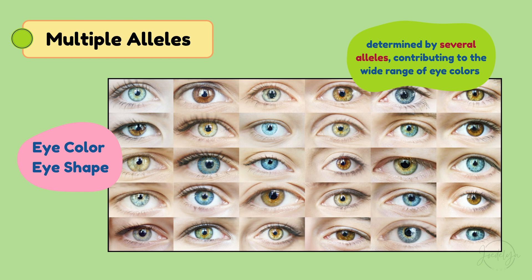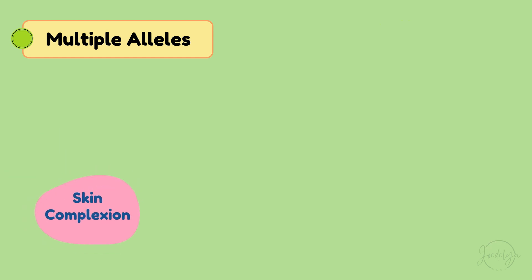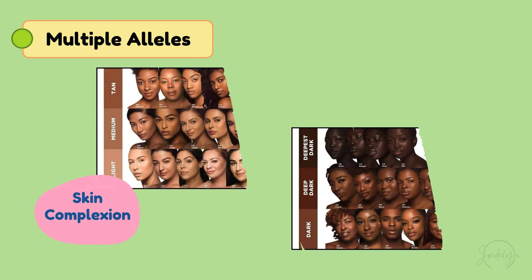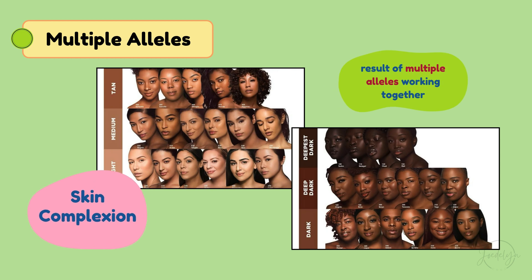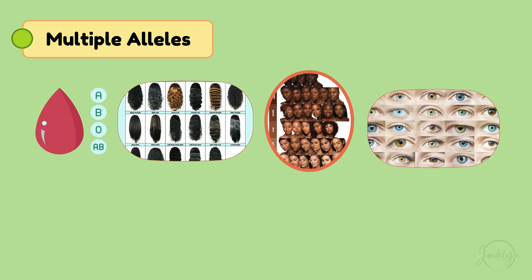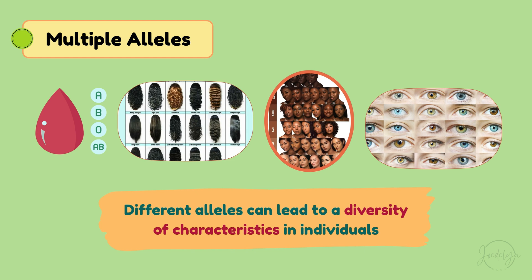Eye color contributes to the wide range we see — like blue, green, and brown — as well as differences in shape. Even skin complexion, ranging from lighter to darker shades, is a result of multiple alleles working together. These traits show us how the interaction of different alleles can lead to a diversity of characteristics in individuals.